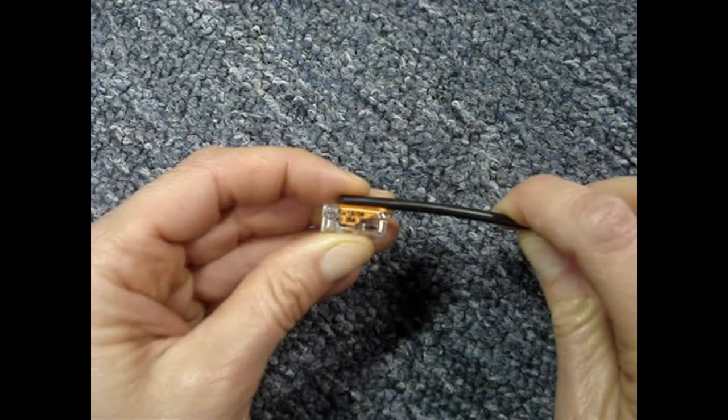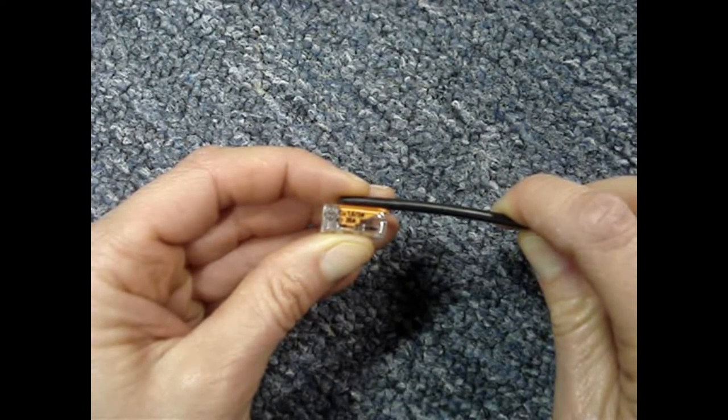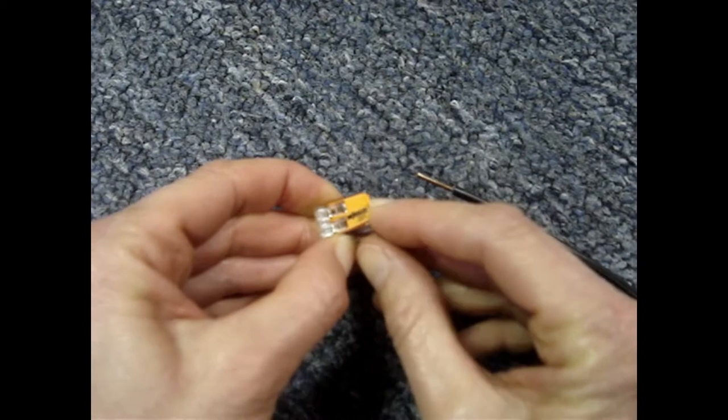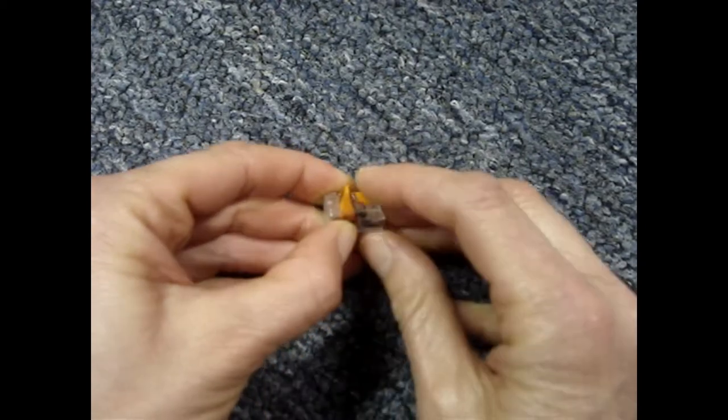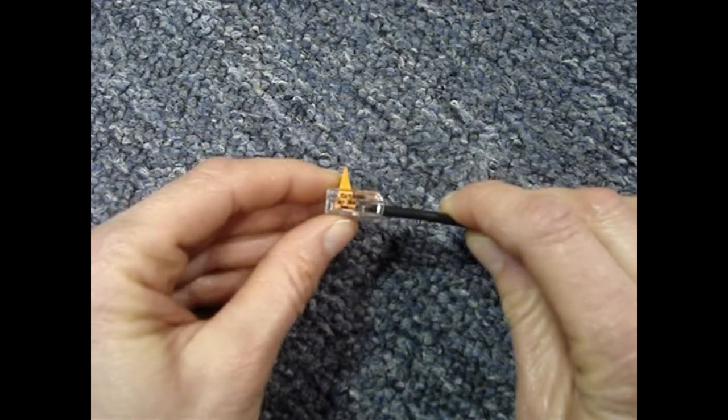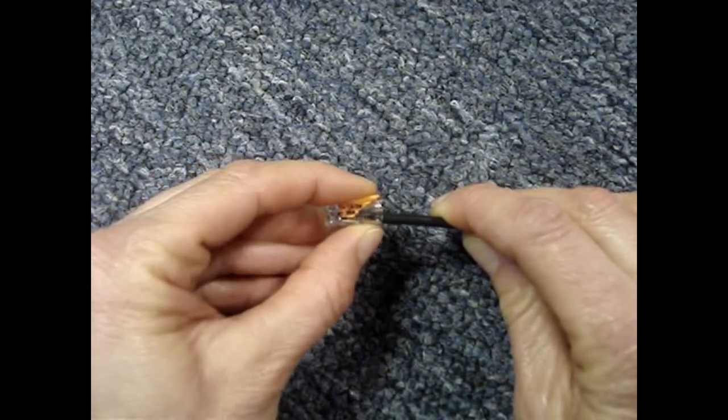Use the gauge on the side of the connector to strip the wire back 11-7 millimeters or about 7 sixteenths of an inch. Open the lever, insert the wire, close the lever.